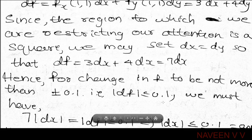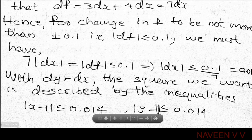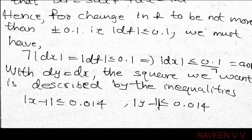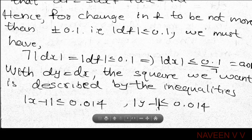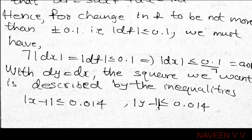Since the change in f must not exceed plus or minus 0.1, we have |df| ≤ 0.1. Therefore 7dx ≤ 0.1, giving dx ≤ 0.1/7 = 0.014. The required square has side 0.014, centered at (1,1), so the conditions are |x minus 1| ≤ 0.014 and |y minus 1| ≤ 0.014.